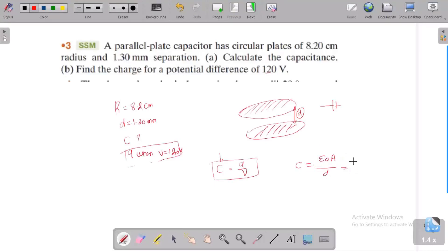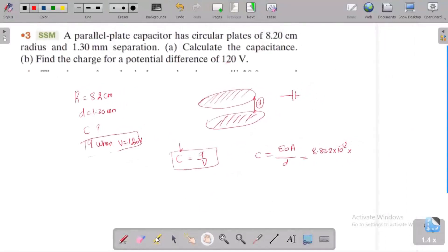We know that the value of epsilon naught is 8.852 into 10 power minus 12. Here area is the area of the circle. Circular plate means we use the formula for the circular area, πr².